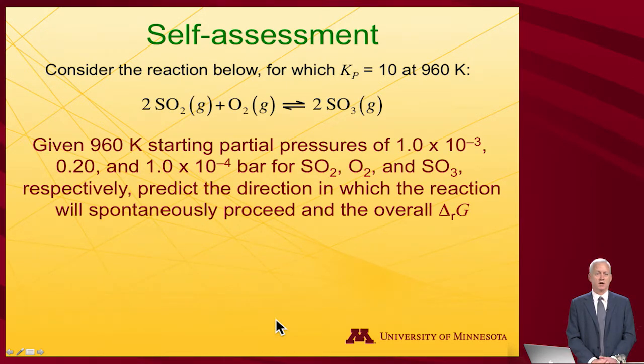So here's a chance to actually put that into practice. Here's a reaction we've seen before. 2 sulfur dioxide plus oxygen goes to 2 sulfur trioxide. I've given you the equilibrium constant. K sub P is 10 for that balanced chemical reaction. And it's 960 Kelvin. With those starting conditions, predict the direction that the reaction will spontaneously proceed. And what's the overall free energy of reaction?